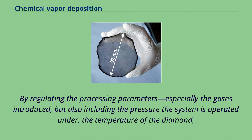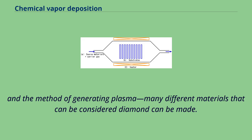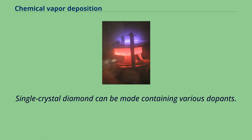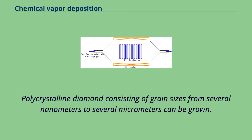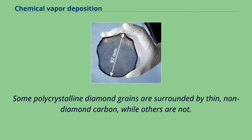Single crystal diamond can be made containing various dopants. Polycrystalline diamond consisting of grain sizes from several nanometers to several micrometers can be grown. Some polycrystalline diamond grains are surrounded by thin, non-diamond carbon, while others are not. These different factors affect the diamond's hardness, smoothness, conductivity, optical properties and more.